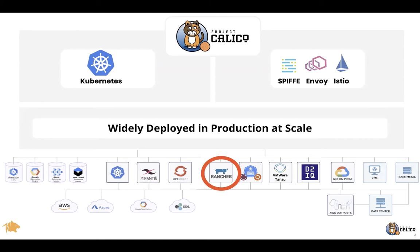Both from an open source perspective as well as our commercial products, Calico runs anywhere you have Kubernetes. Whether you're using a public cloud offering like EKS, GKE, or IBM IKS, Calico has been powering the policy enforcement and has been picked by all four major managed Kubernetes services to power policy enforcement, launched as an add-on for those cloud services.